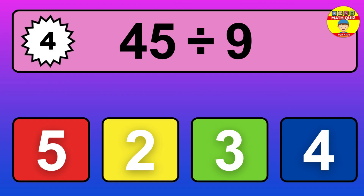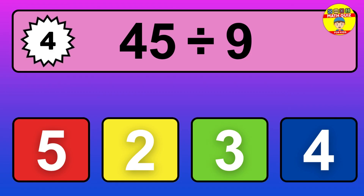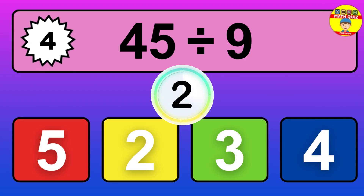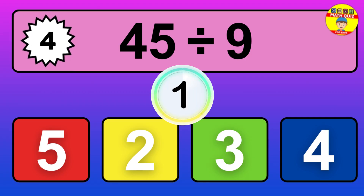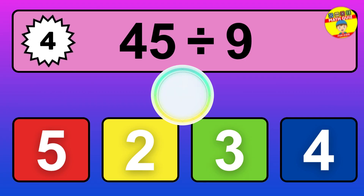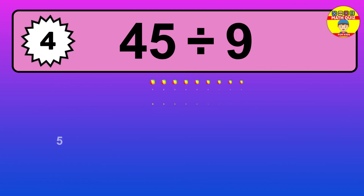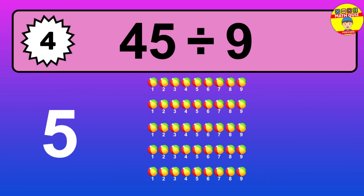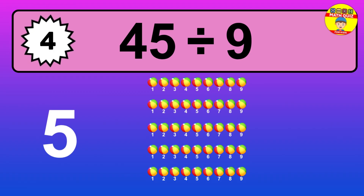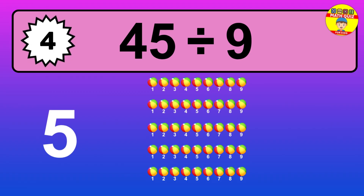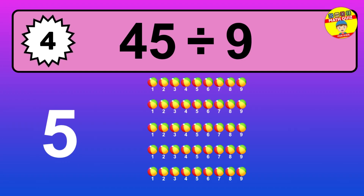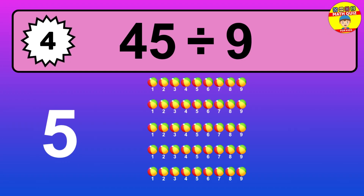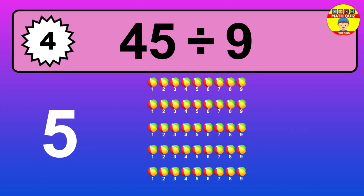45 divided by 9 — it's time to think. Let's go to the solution. Divide the number 45 by 9. Each group contains 9 units, so dividing 45 by 9 results in 5 equal groups. Thus, the result is 45 divided by 9 equals 5.